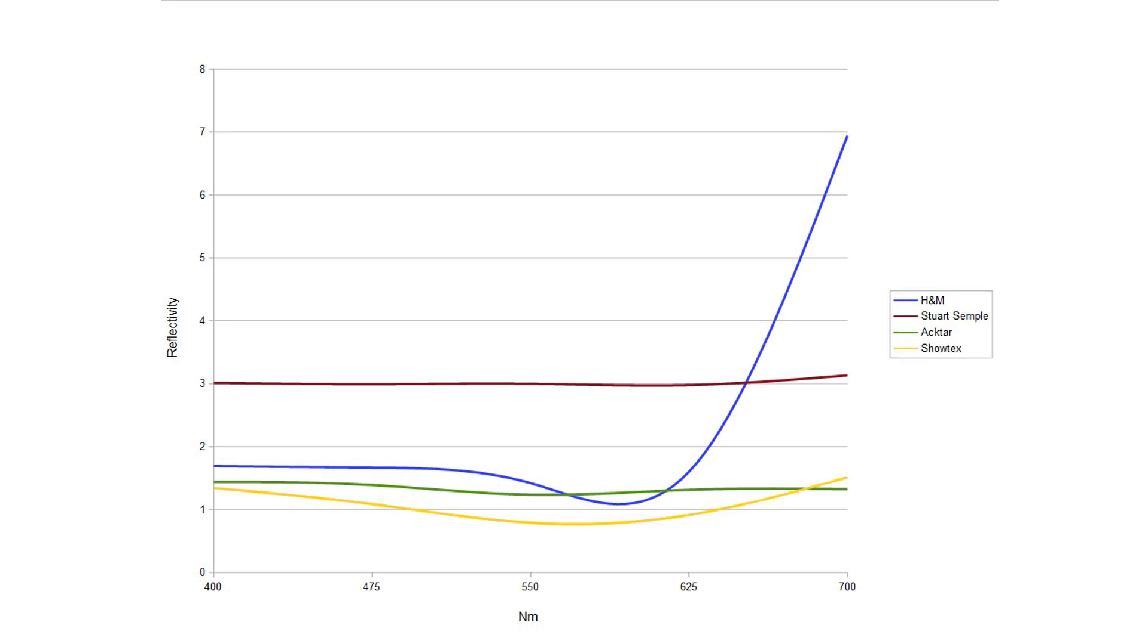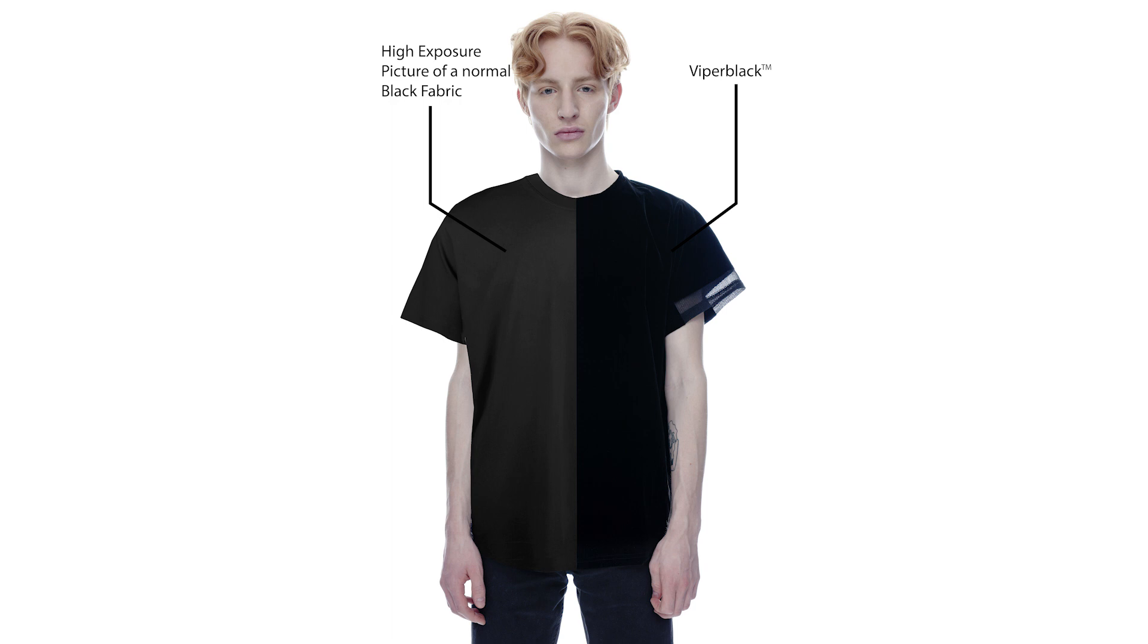Then the Showtex fabric. NASA's favourite. And here we are with a very nice evenly distributed graph. We said that we would make the blackest t-shirt in the world. And we did.